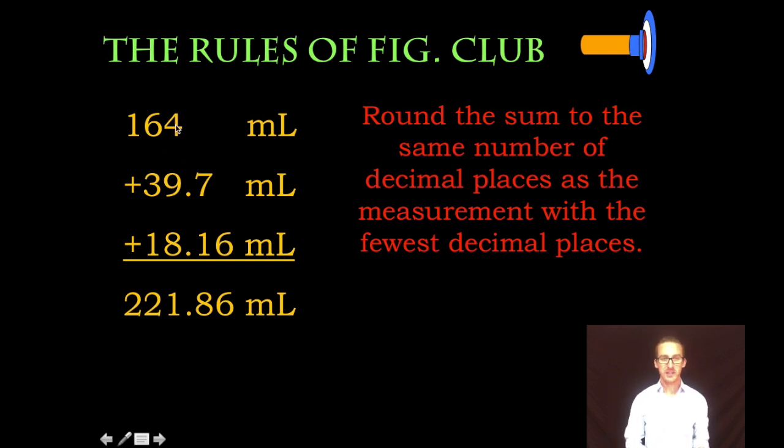The first measurement is only precise to the ones place, second measurement to the tenths place, third measurement to the hundredths place. 164 is least precise, so I'm going to round to the ones place.